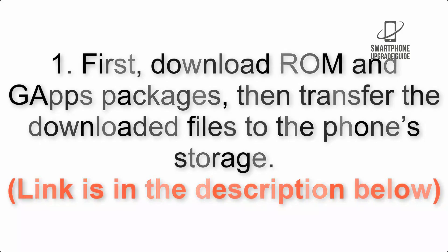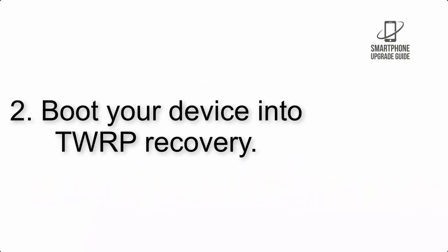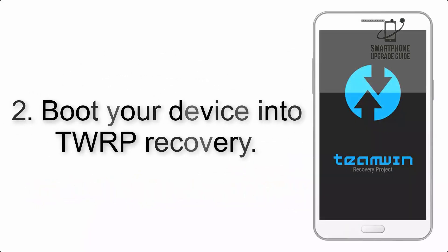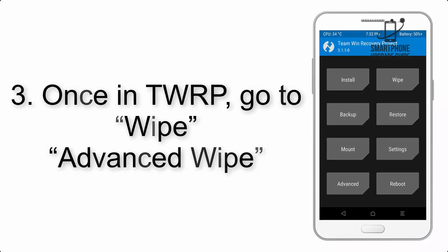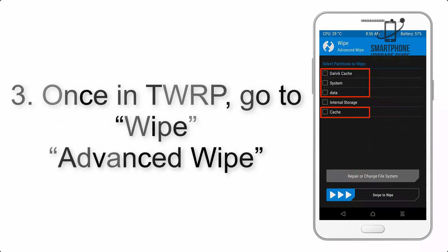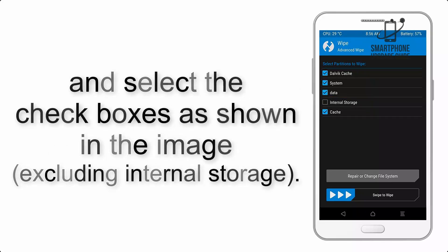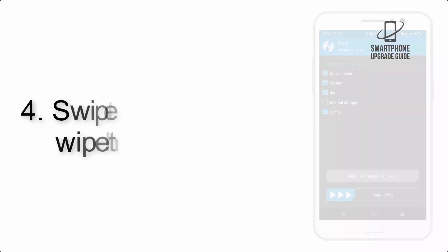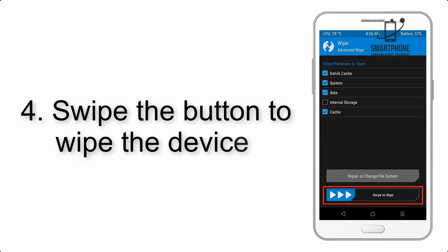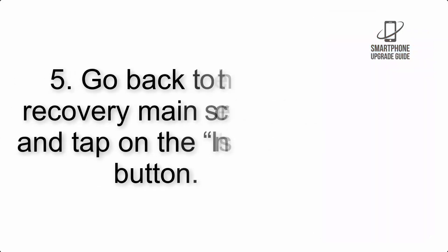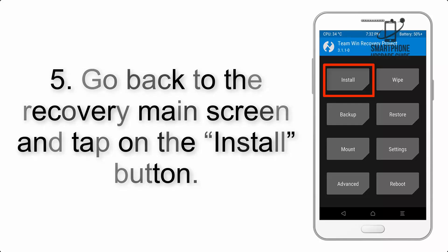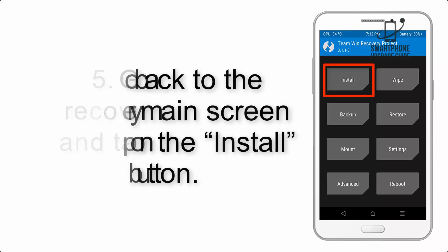Step 2: Boot your device into TWRP recovery. Once in TWRP, click on Wipe, then Advanced Wipe, and select the checkboxes as shown in the image, excluding internal storage. Step 4: Swipe the button to wipe the device.